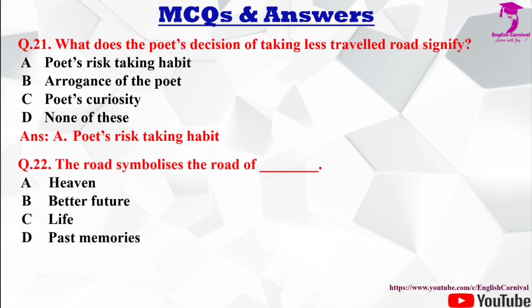Question number 22: The road symbolizes the road of ___. Options: A) heaven, B) better future, C) life, D) past memories. The correct answer is C — life.